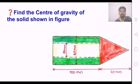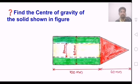Find the center of gravity of the solid shaded figure. There are three sections: a cylinder, a hollow cylinder, and a conical portion.